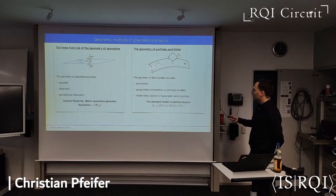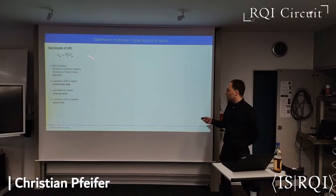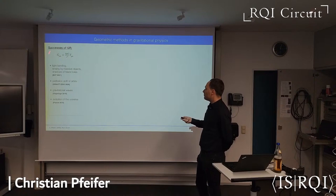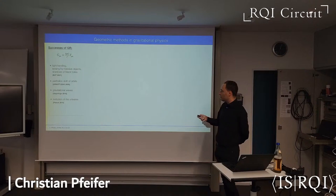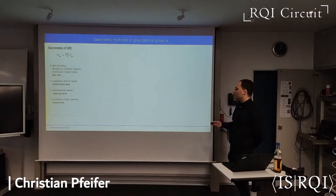When we combine these two things, mainly focusing on the geometry of space-time, these theories are normally successful. In particular, general relativity predicts light bending, gravitational lensing of light, shadows of black holes, the perihelion shift of orbits of stars and planets, gravitational waves, and the evolution of the universe as a whole.